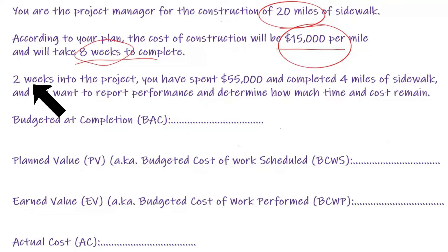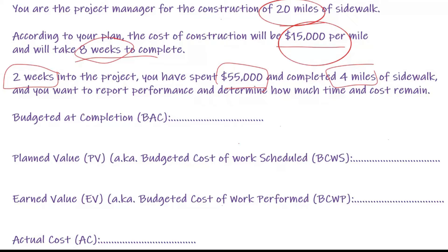Two weeks into the project you've spent $55,000 and completed four miles of sidewalk, and you want to report performance and determine how much time and cost remain.